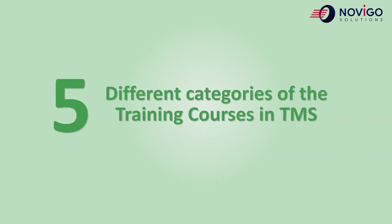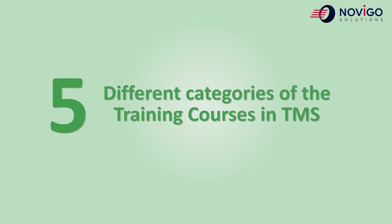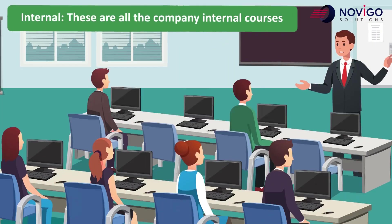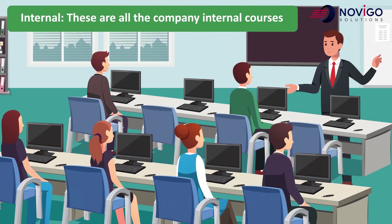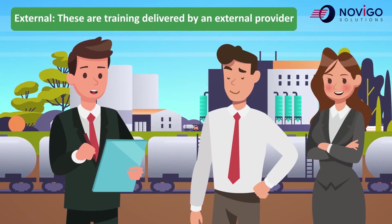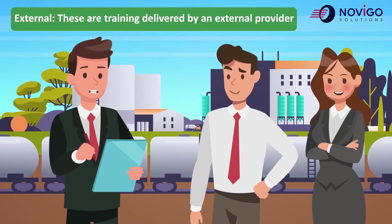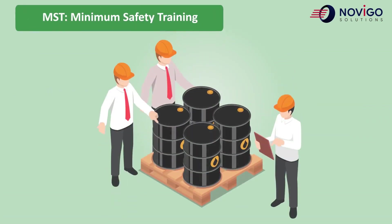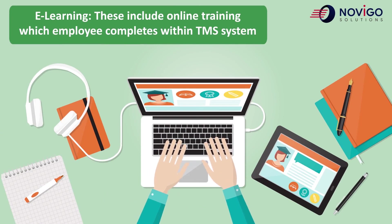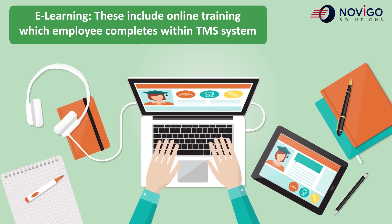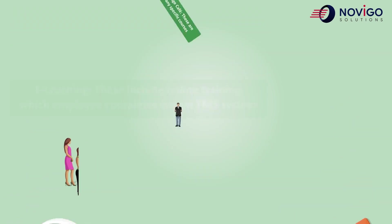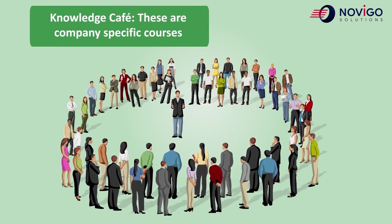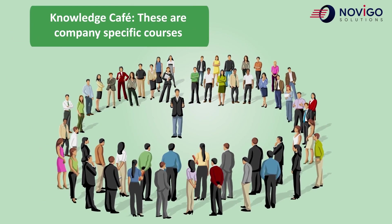There are five different categories of training courses in the TMS. One, internal — these are all the company internal courses. Two, external — these are training delivered by an external provider. Three, MST, minimum safety training. Four, e-learning — these include online training which an employee completes within the TMS system. Five, knowledge cafe — these are company specific courses.